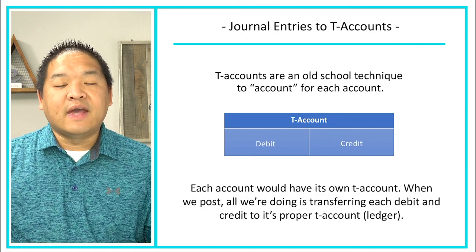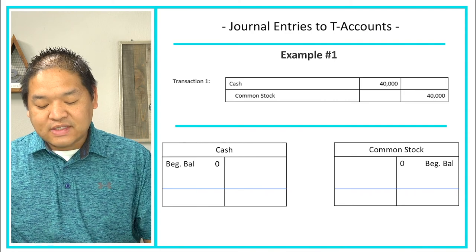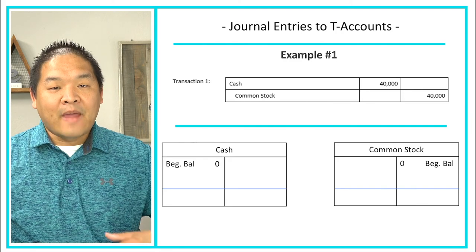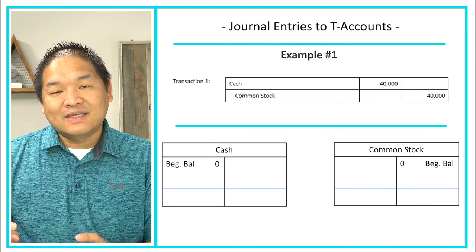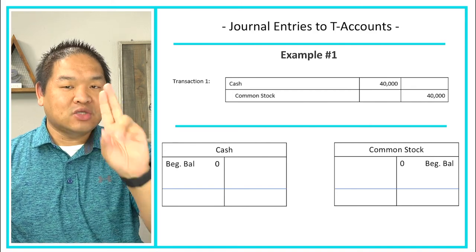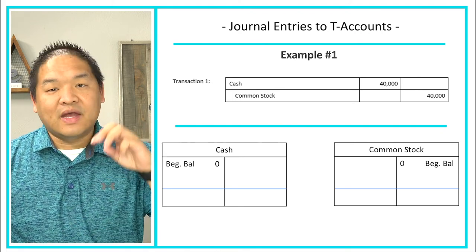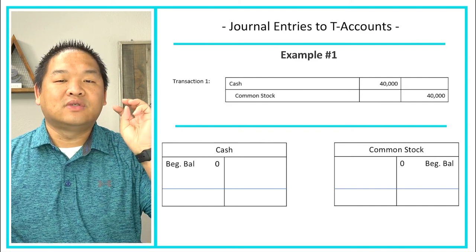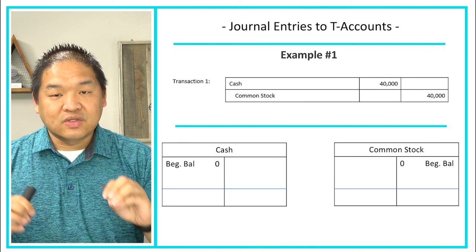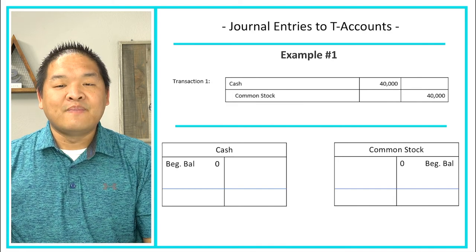Let me give you an example of an entry we did two lessons ago. We have this transaction where we debited cash for $40,000 and credited common stock for $40,000. This journal entry has two lines, which means we're going to take each line and post it to their actual accounts. If it were a compound entry with three lines, we'd post to three different accounts. The first line is a debit to cash in the amount of $40,000.